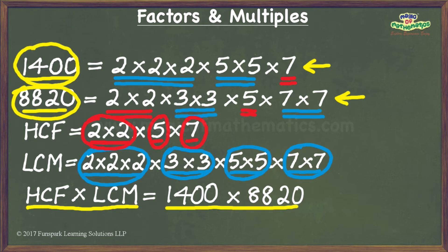It is easy to see why this happened. For finding the HCF we identify the occurrences of a prime factor from the prime factorization where it occurs the least number of times, whereas for finding the LCM we identify the occurrences from the prime factorization where it occurs the most number of times. Since we are dealing with the prime factorizations of two numbers, a prime factor which occurs most in one of the prime factorizations will automatically have the least number of occurrences in the other.